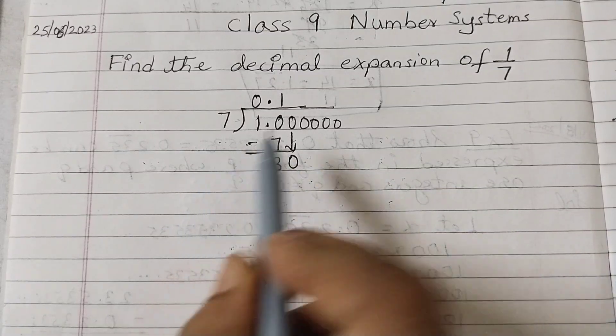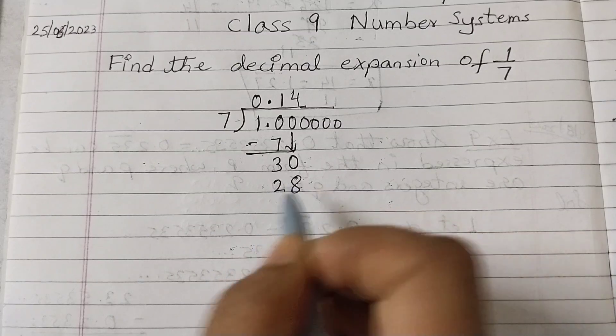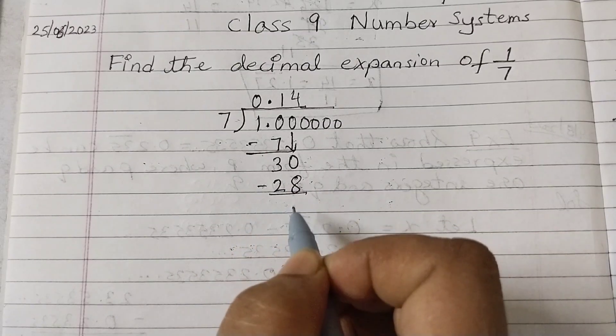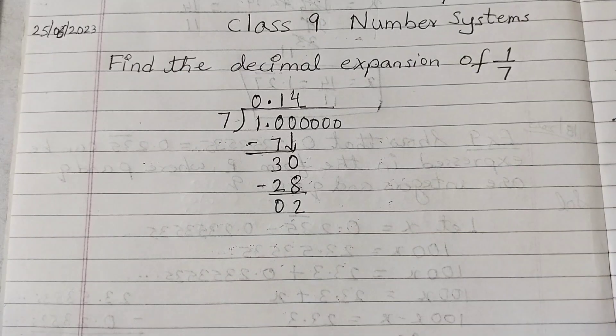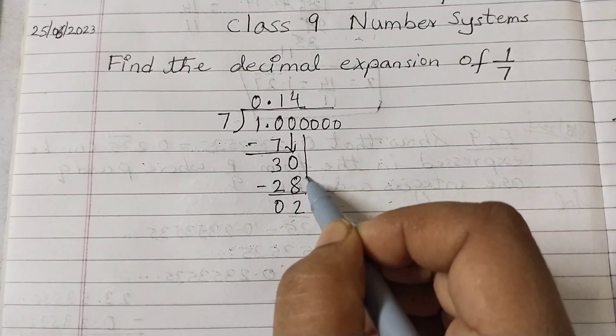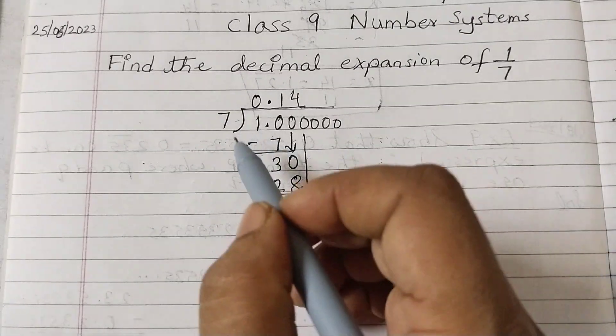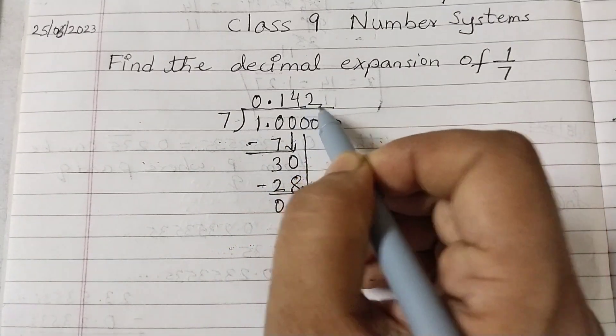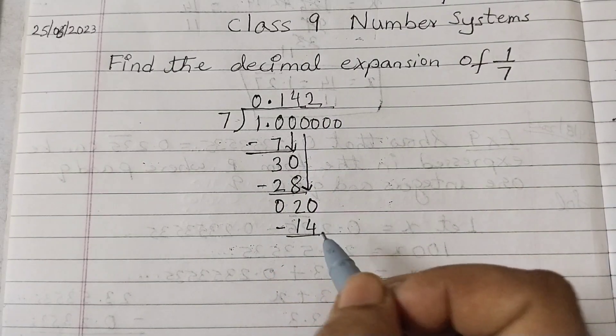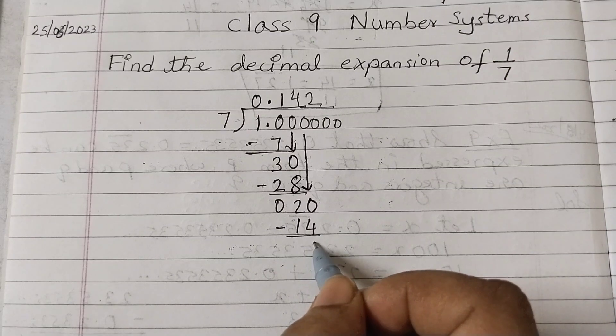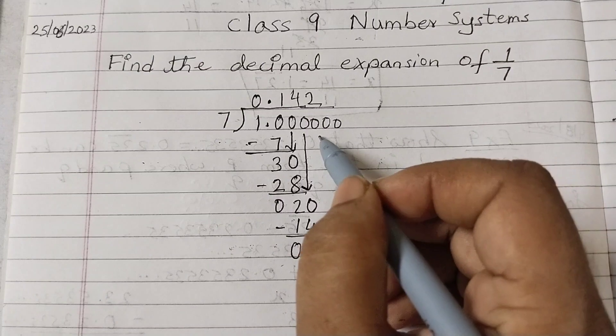7 into 4 is 28. 30 minus 28 is 2. Bring down the next 0. 7 times 2 is 14. 20 minus 14 is 6. Next 0.